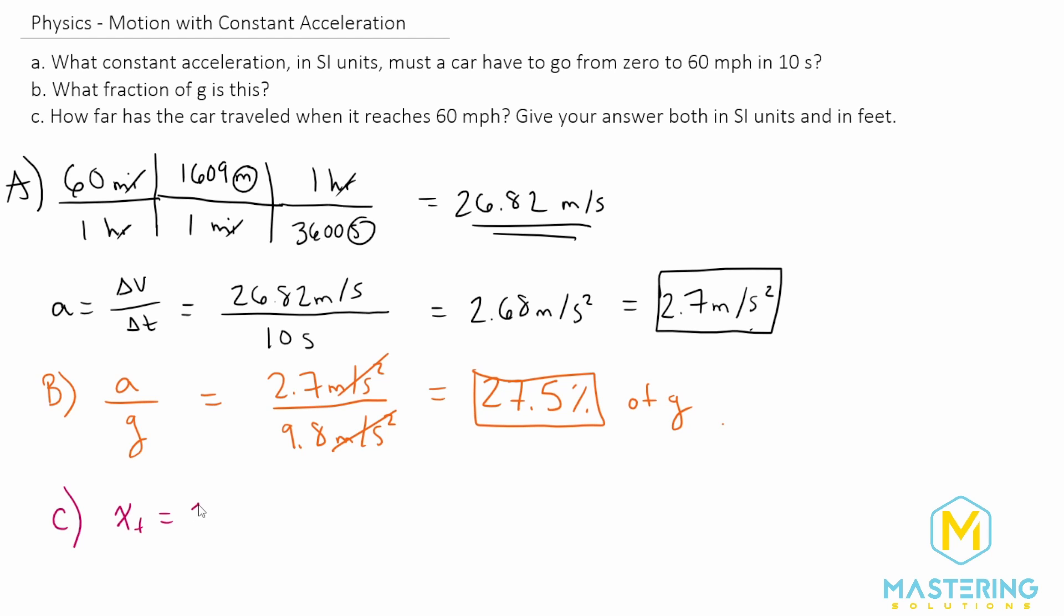x final equals x initial plus the initial velocity times the time plus one half the acceleration times the time squared. Now if we go through this, we're starting from rest, we're starting from zero. So x initial is zero. The initial velocity since we're starting from zero is also zero. So this whole section goes away.